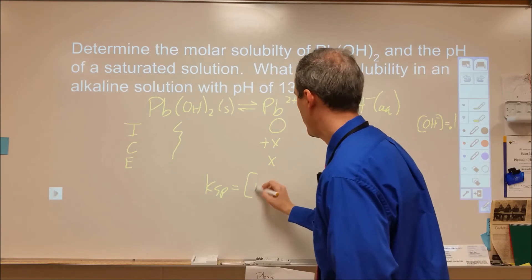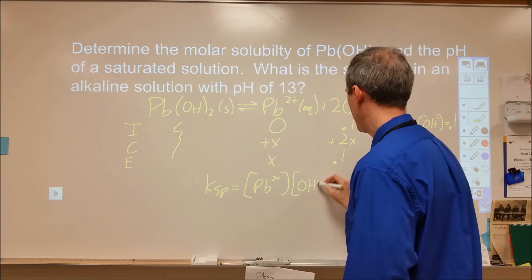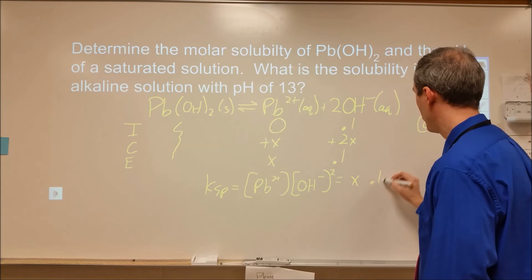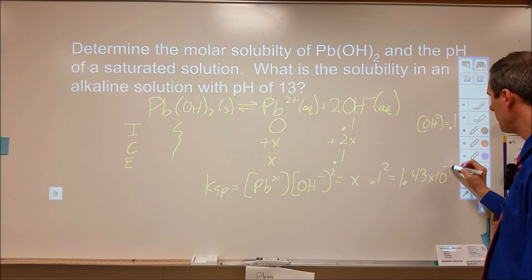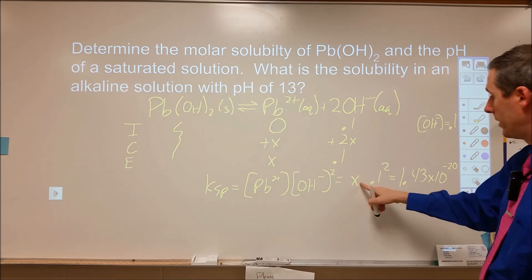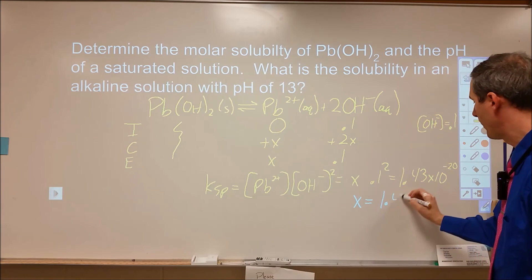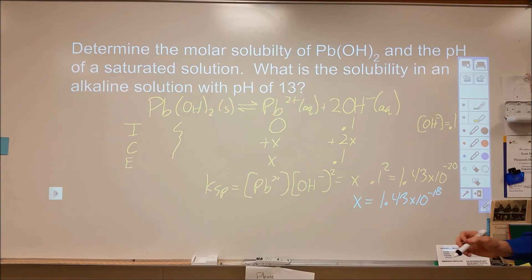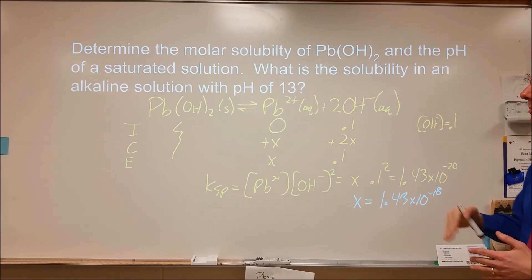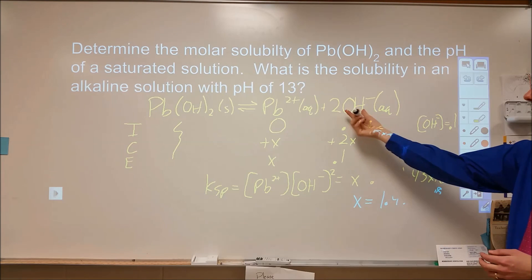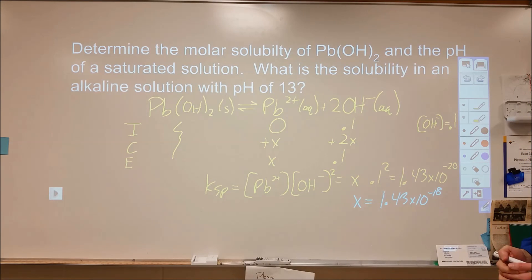I'm going to plug that into my K expression. KSP equals my lead 2+ concentration times my hydroxide concentration squared. We get x times 0.1 squared equals the KSP value, which was 1.43 times 10 to the negative 20. When I divide the 0.1 squared into this, x is going to equal 1.43 times 10 to the negative 18. My last problem was dissolving it into neutral water. My solubility was 1.53 times 10 to the minus 7. So having a pH of 13 causes that solubility to drop by over a billion. Less than a billion times less will dissolve if I'm adding into a solution that starts with a significant quantity of hydroxide present. Thank you for listening.